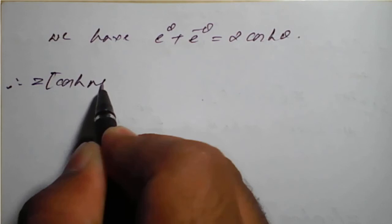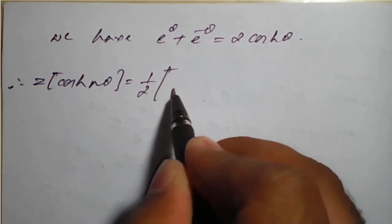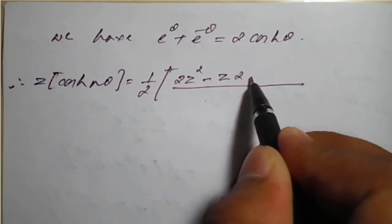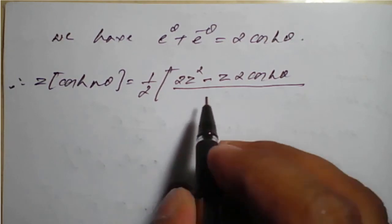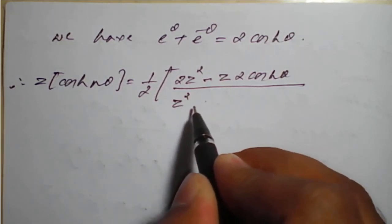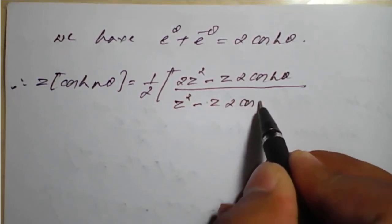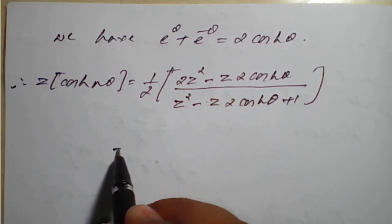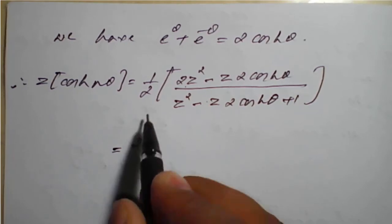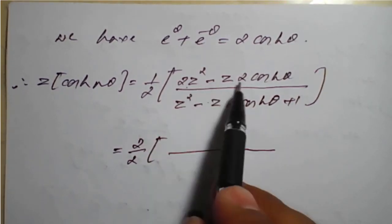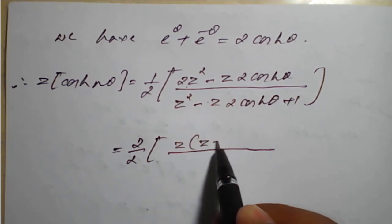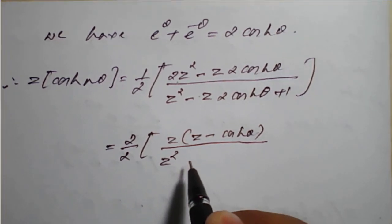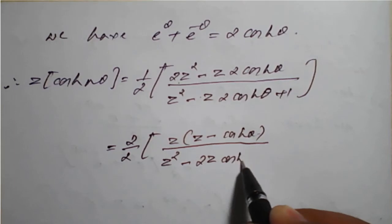Therefore, the Z-transform of cosh(nθ) equals 1/2 times (2z² − z·2·cosh(θ)) divided by (z² − 2z·cosh(θ) + 1). The 2 in the numerator and the 1/2 cancel, and taking z outside gives z(z − cosh(θ)) in the numerator.